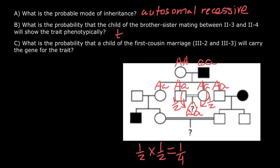One quarter is the probability that a child of this couple is going to be small a, small a genotype. The last question: what is the probability that the child of the first cousin marriage between individuals III-2 and III-3 will carry the gene for the trait?